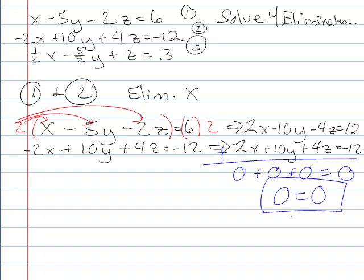Okay, 0 equals 0. That's true. Alright, I've got a problem. I've essentially got at least two equations here that are the exact same thing. They're just multiples of each other. So 1 and 2 are multiples of each other.